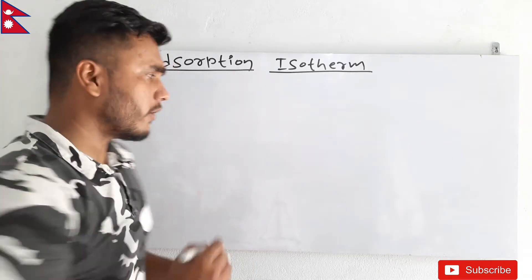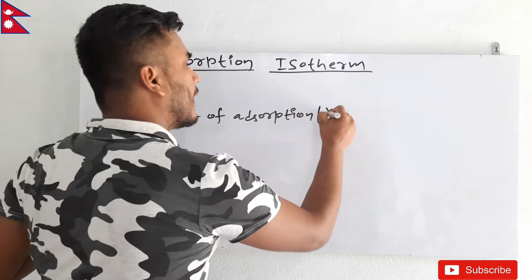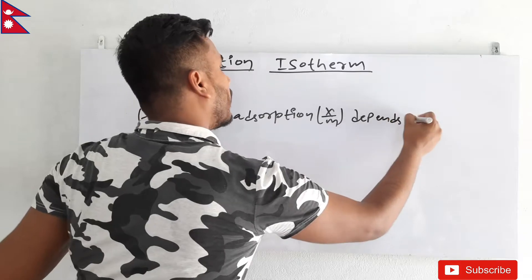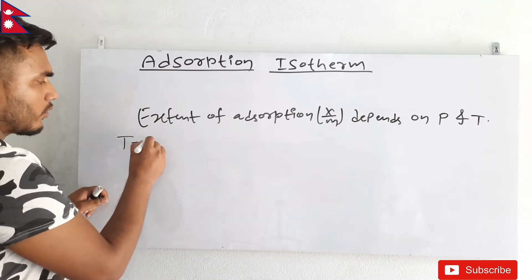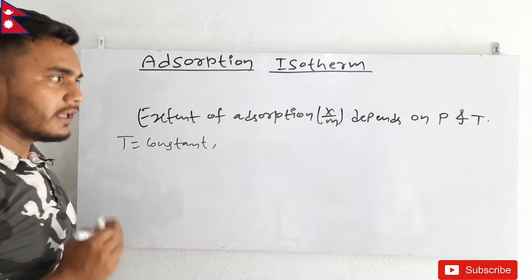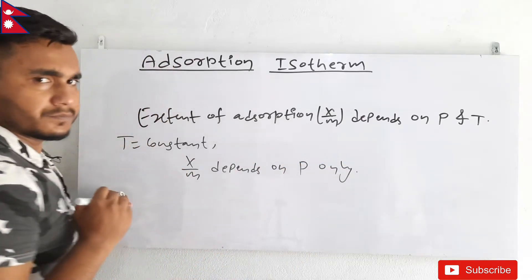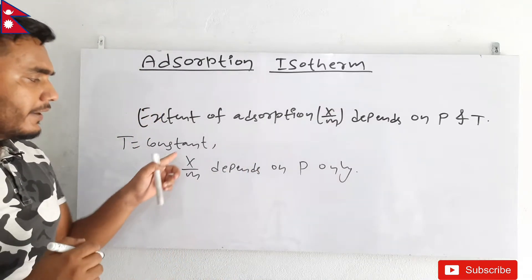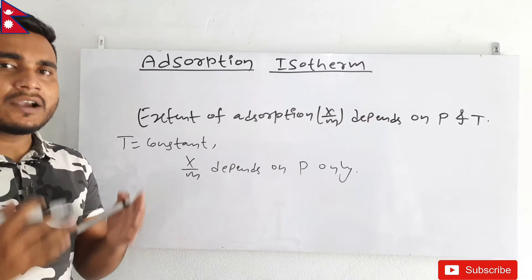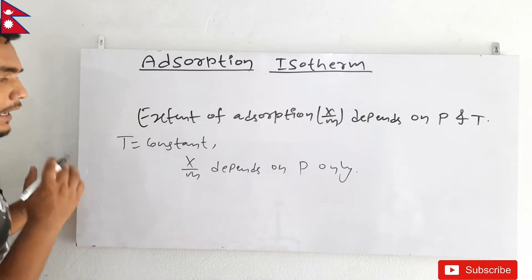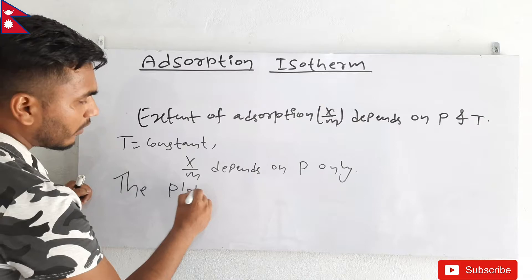Now let's see what adsorption isotherm actually is. Adsorption isotherm is: extent of adsorption, denoted by x/m, depends on pressure as well as temperature. If we put temperature constant, then x/m depends on pressure only. So if we vary pressure, we get different values for extent of adsorption — that is x/m. Extent of adsorption is the amount of gas adsorbed on the surface of unit gram of adsorbent.